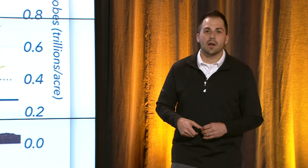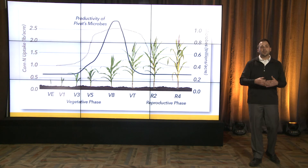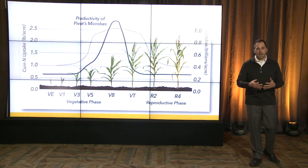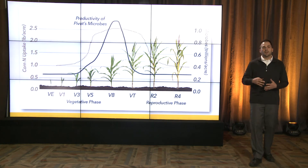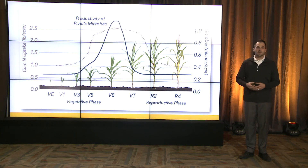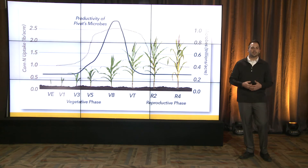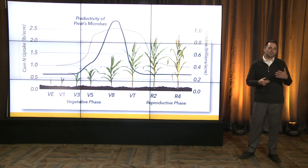And finally, Pivot Bio. Pivot Bio's microbes adhere to roots and create a symbiotic relationship with the corn plant. As populations of the applied microbes increase as that corn plant grows, the maximum output of the microbes is at the same time as the peak uptake of nitrogen — having that timing right. Pivot Bio is applied in-furrow.